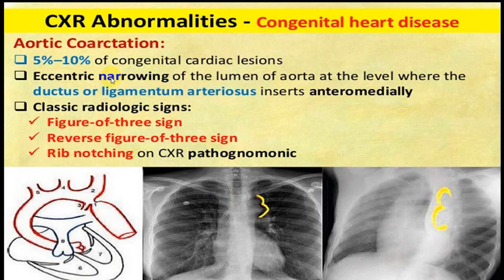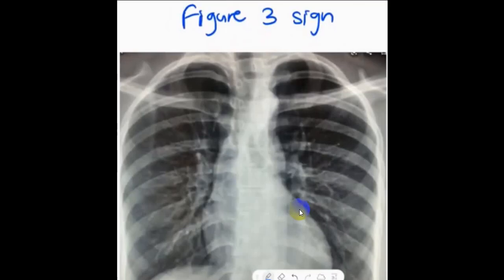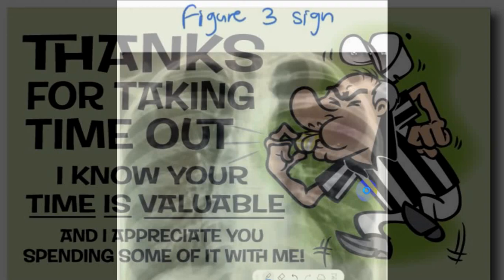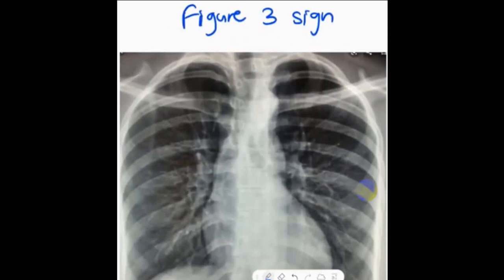In coarctation of the aorta, at the aortic knob you will see the figure-3 sign or reverse figure-3 sign. There will also be rib notching visible on the ribs. You can see rib notching and the figure-3 sign together — figure-3 sign with rib notching is more in favor of coarctation of the aorta.